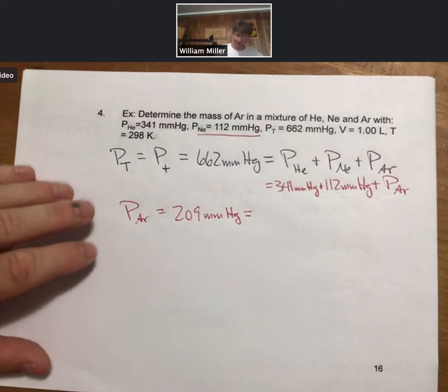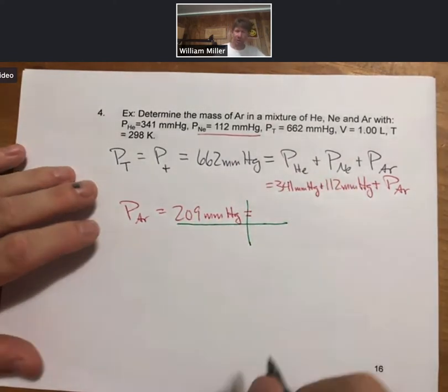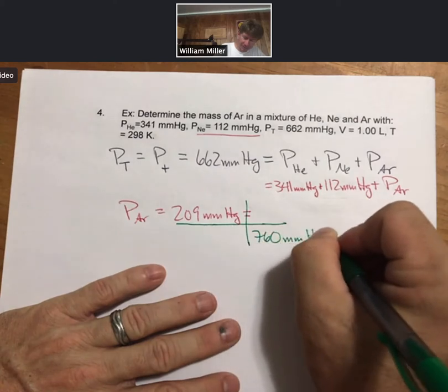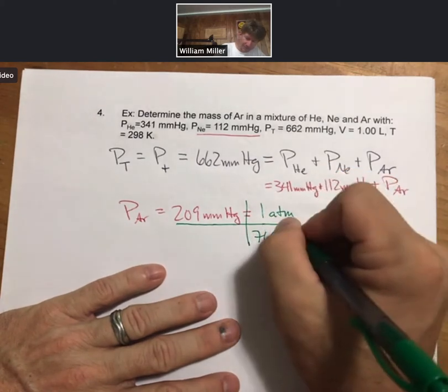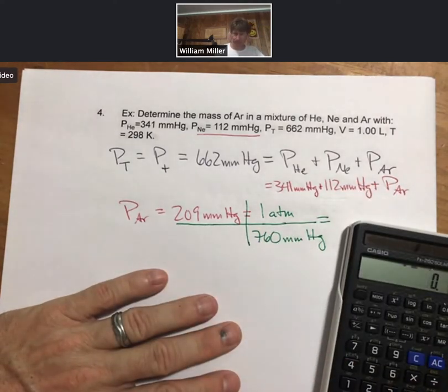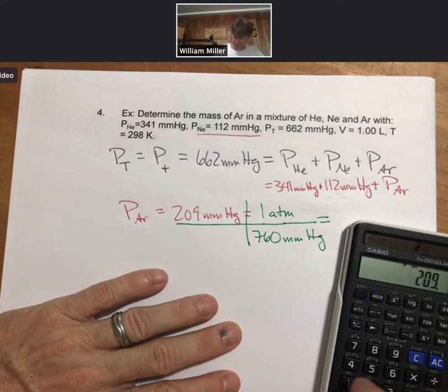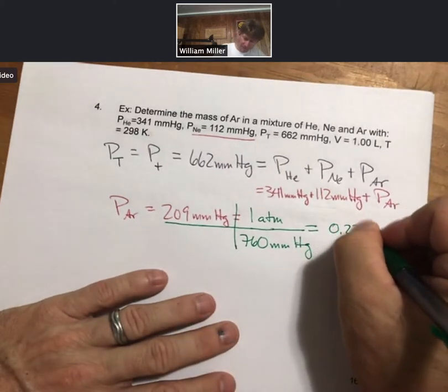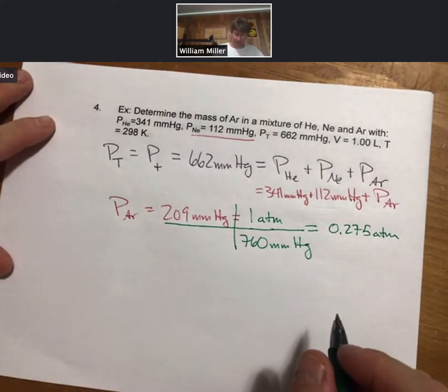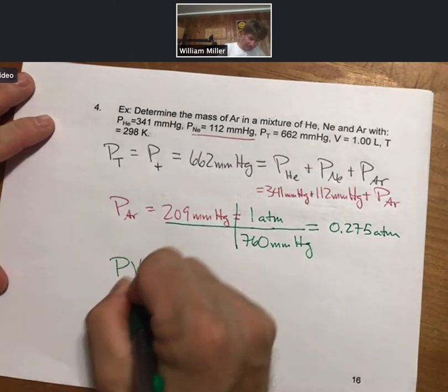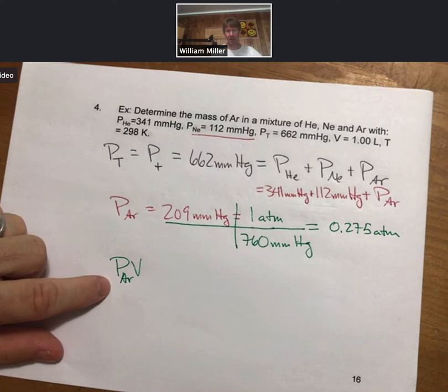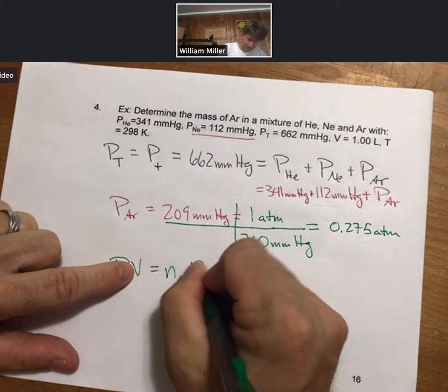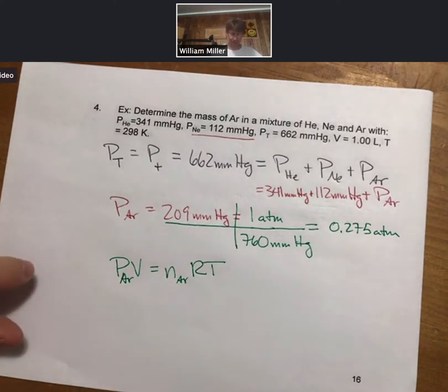And we will convert that into atmospheres because we are going to be using the ideal gas law to get our moles and then our grams. There are 760 millimeters of mercury per one atmosphere. 0.275 atmospheres.